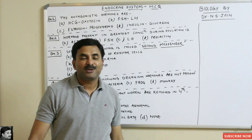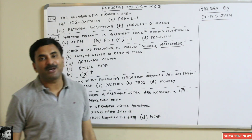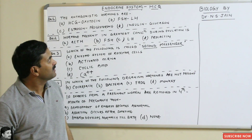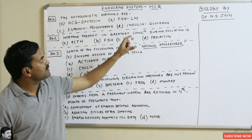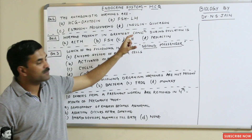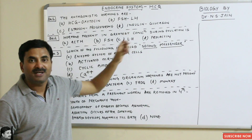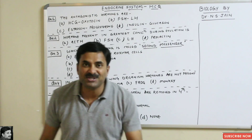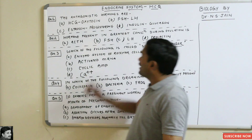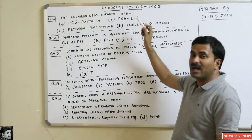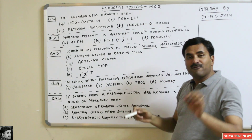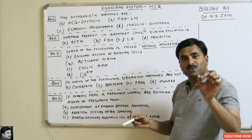Hello, you are watching Biology by Dr. Nation. Today we are going to discuss some MCQs based on the endocrine system. The very first question is: what are the antagonistic hormones? First of all, you must know what antagonistic means.